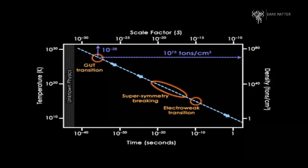Here are the conditions near the GUT transition: the scale factor is 10 to the minus 28 and the density is 10 to the 73 tonnes per cubic centimetre, which gives an expansion doubling time of about 10 to the minus 36 seconds. You need at least a hundred doubling times to solve the flatness and horizon problems. But either way, we end up with a large, flat, homogeneous universe just like the one we see.